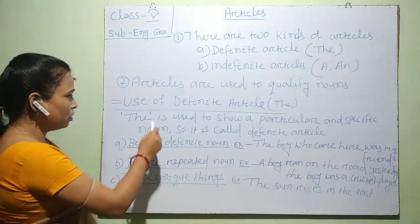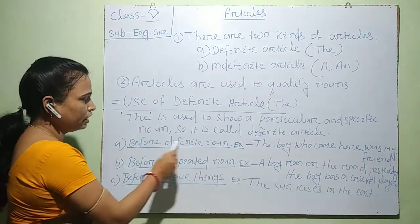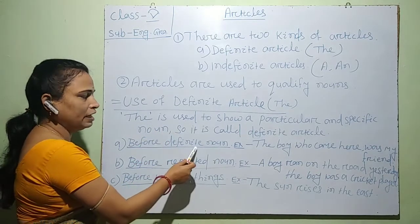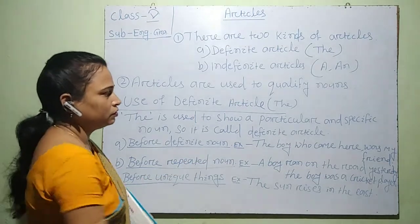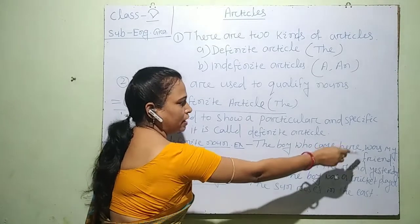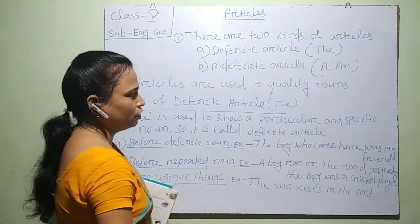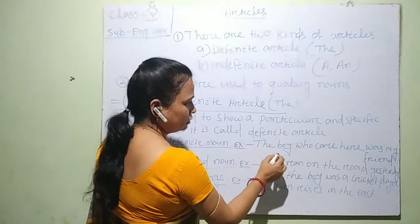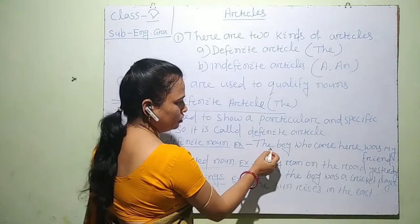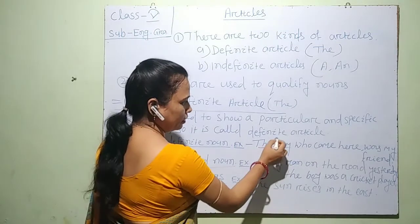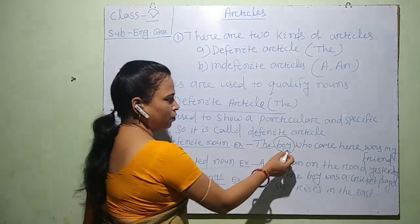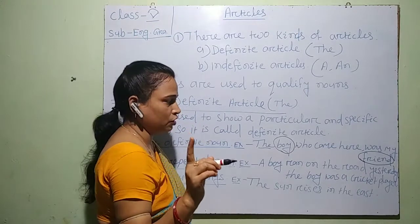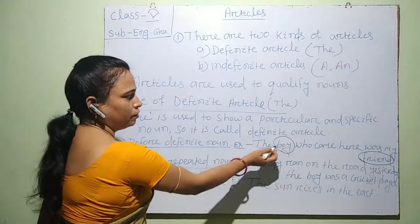Where do we use 'the'? We use 'the' before a definite noun. For example: 'The boy who came here was my friend.' In this sentence, I have used 'the' before the word 'boy' because 'boy' and 'friend' refer to the same one person.